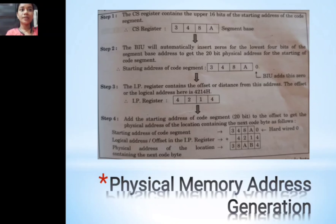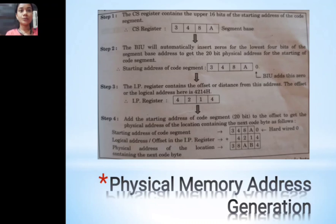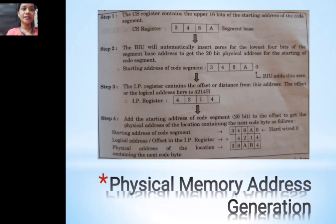Step 2: the BIU automatically appends a zero to the lowest 4 bits of the segment address, making it 348A0H. Step 3: the IP register contains the offset — the distance from the start address — for example, 4214H. Step 4: adding the segment base 348A0H and the IP offset 4214H gives the physical address 38AB4H. This is physical memory address generation.